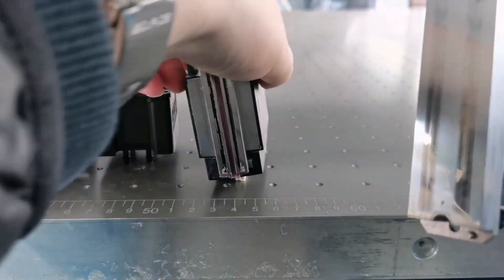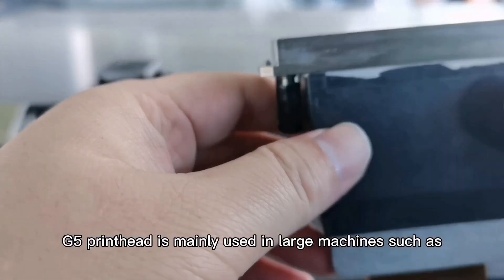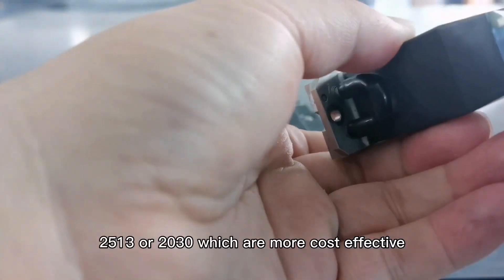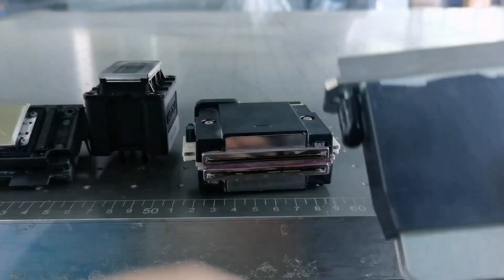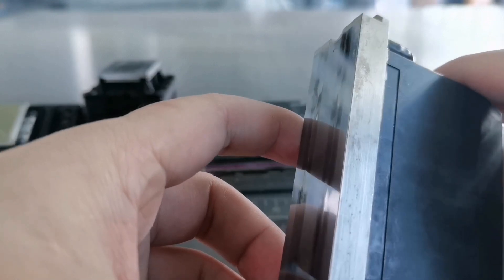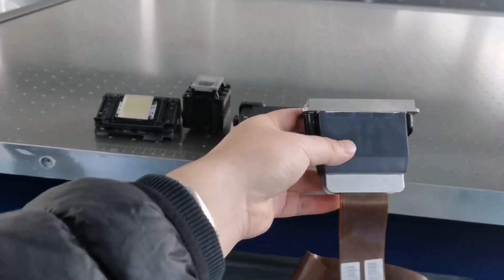G5 printheads are mainly used in large machines such as 2513 or 2030, which are more cost-effective.